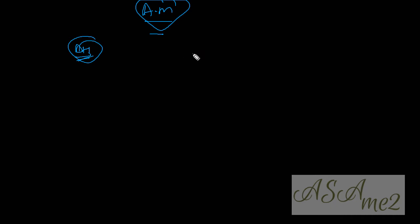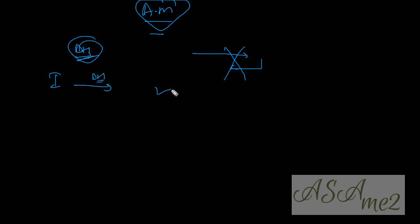In aggressive mode there are three packets. Before sending the first packet, understand one important thing: the Diffie-Hellman group will not be negotiated. In main mode, the initiator would send the Diffie-Hellman group and the responder would negotiate and send back the agreed group. That does not happen in aggressive mode. The initiator sends the Diffie-Hellman group and the responder simply has to agree to it — it is not allowed to negotiate. If the responder does not agree, the negotiation fails.